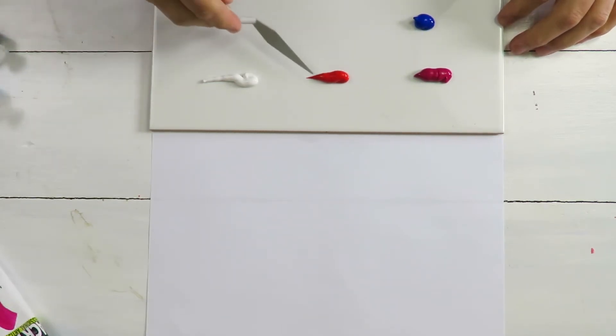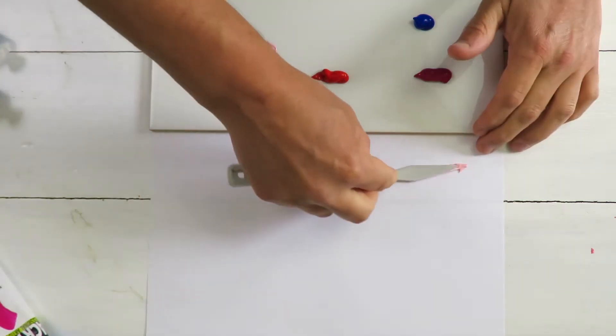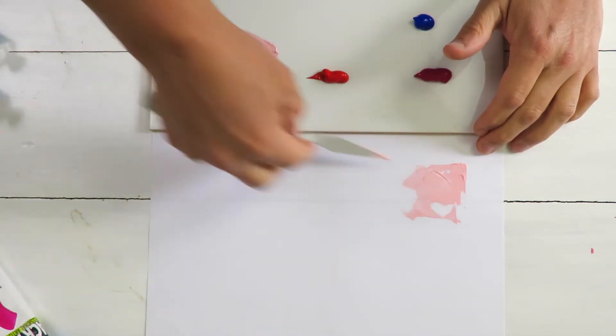We'll just add a bit of red paint. I've got a very light colour of pink here. Add this here so you can have a look and see what it looks like.